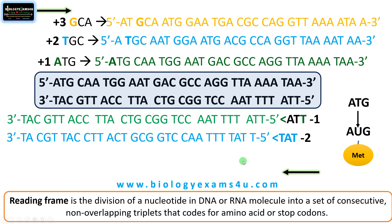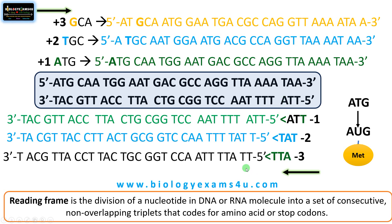Selecting the third nucleotide adenine gives the minus three frame with triplets ATT, TTA, ACC, and so on. So a double-stranded DNA molecule has six reading frames in total. A change in reading frame changes the amino acids encoded by those codons.